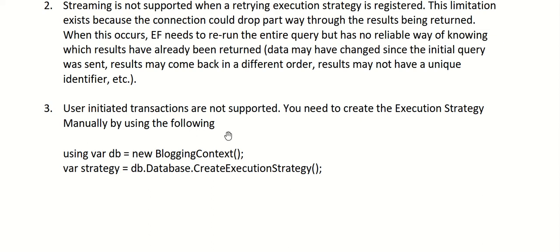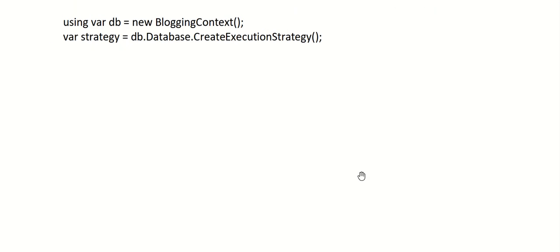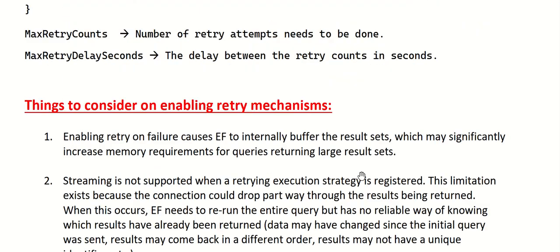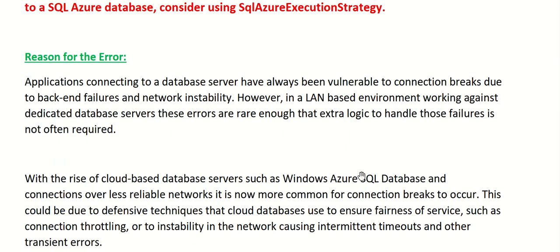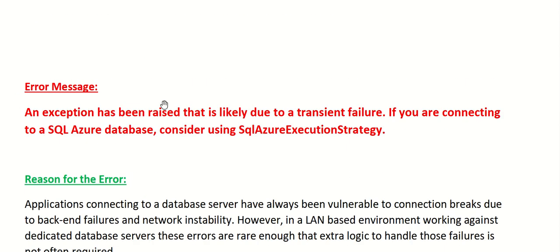There are some other challenges associated with this — for example, when a transient error occurs during a retry itself — which I'll explain in my next video. That's it for today. I hope you understood how to resolve the transient failure-related error in ASP.NET Core Web API. Thank you for listening, and have a nice day.